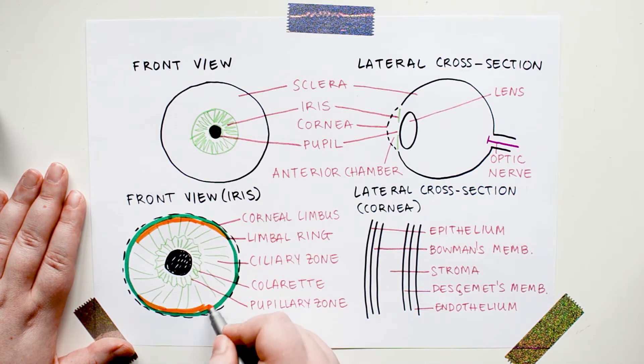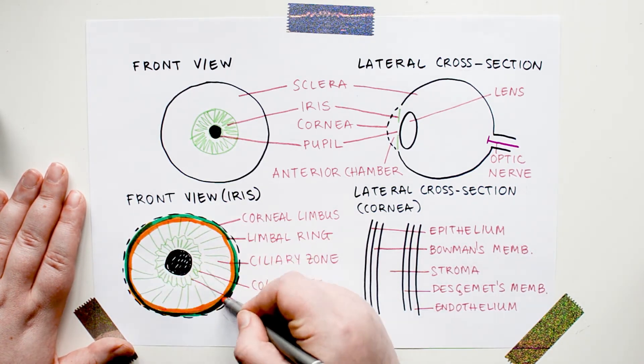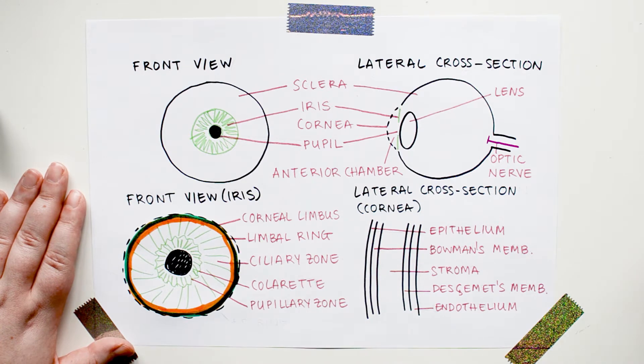Copper deposits first on the top part of the corneal limbus, then on the bottom part, and then the copper deposition area can grow until it goes all the way around.